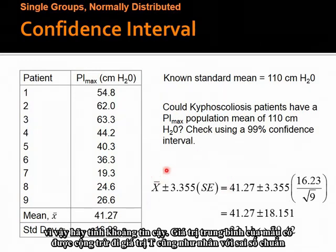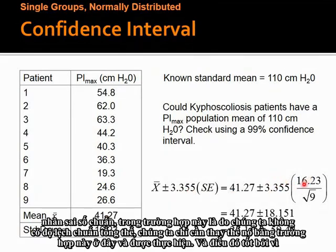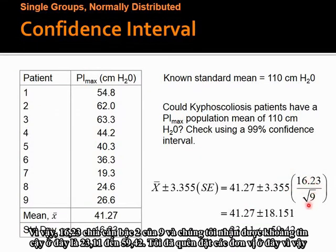Calculating the confidence interval: it's the sample mean plus or minus the T value multiplied by the standard error. The T value for a 99% confidence interval with degrees of freedom of 8 is 3.355. So it's 41.27 plus or minus 3.355 multiplied by the standard error — since we don't have the population standard deviation, we use the sample standard deviation — which is 16.23 divided by square root of 9. We get the confidence interval of 23.11 to 59.42.